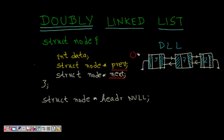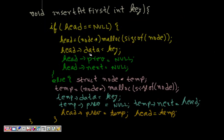We need to maintain a head pointer for the linked list. The head stores the address of the first node. If we have the address of the first node, we can traverse the whole linked list — from the first node we find the address of the next, then from the second we find the third, and so forth.